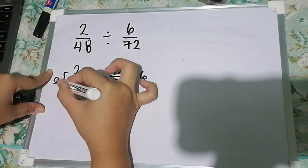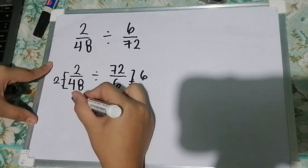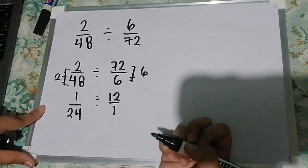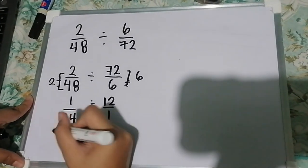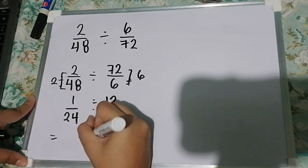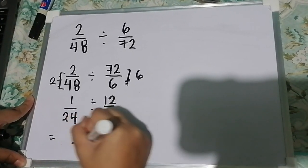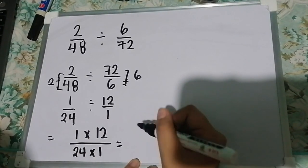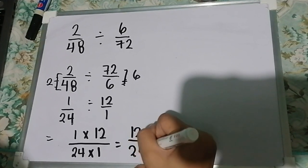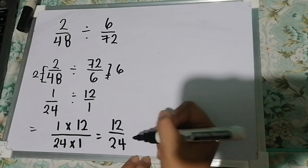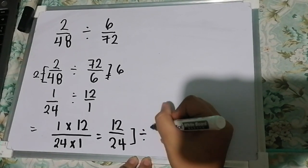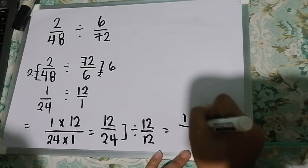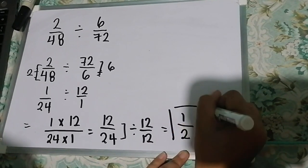However, they have a common factor of 2, so we divide by that. 2 divided by 2 is 1, and 48 divided by 2 is 24. Now, let's multiply them. Numerator to numerator: 1 times 12 over denominator: 24 times 1. So 1 times 12 is 12, and 24 times 1 is 24. Since they have a common factor of 12, we divide by 12. 12 divided by 12 is 1, and 24 divided by 12 is 2. So our final answer is 1/2.